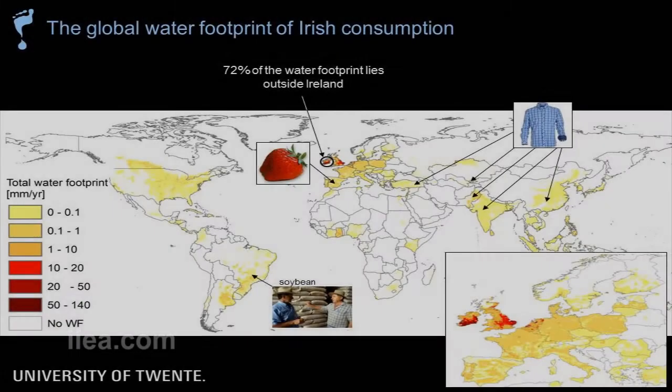You definitely don't get your cotton from Ireland. It's impossible to make it here, so it is being grown in other places like Turkey, Pakistan, India, Central Asia, and there are all sorts of problems behind it. I will show you that in a minute.